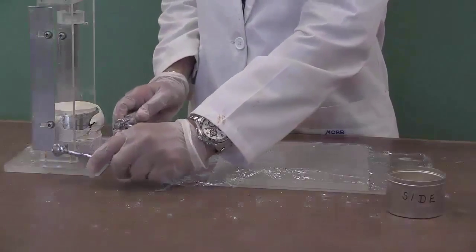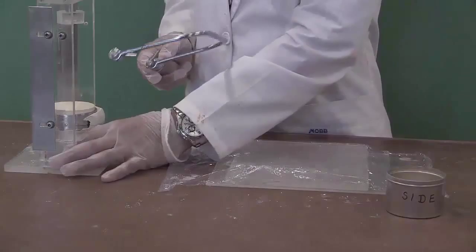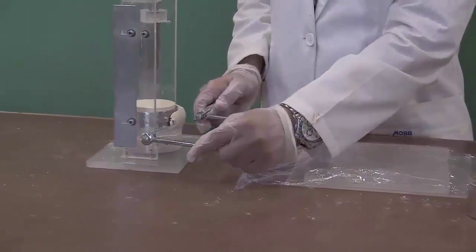Using the wire saw, remove the soil around the odometer ring and collect some of the side trimmings into one of the metal containers. These trimmings will be used for the determination of moisture content.